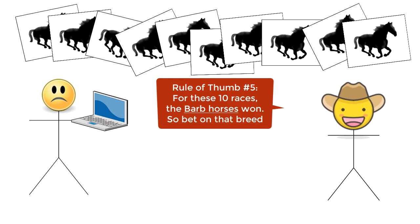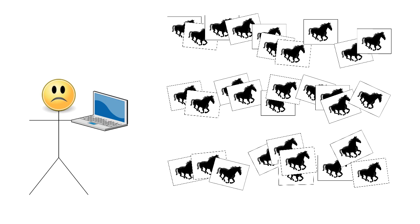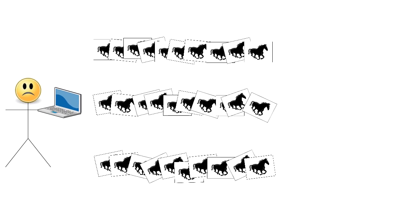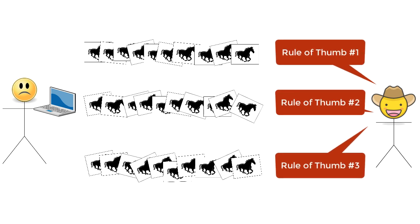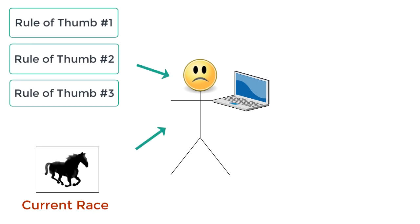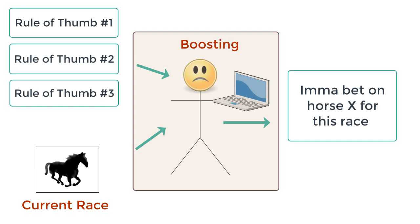And so we give our expert a different set of races, and he would give us back some rules of thumb. But here's what we need to do. What is the best way to group these horse races into sets in order to get the best rules of thumb from our expert? And even if we do do that, and we have these rules of thumb ready, how do we actually make predictions on, or how do we make decisions on which horse to bet on in a race? Now, boosting solves both of these questions. It's a technique where we combine multiple rules of thumb to make an accurate and informed decision.